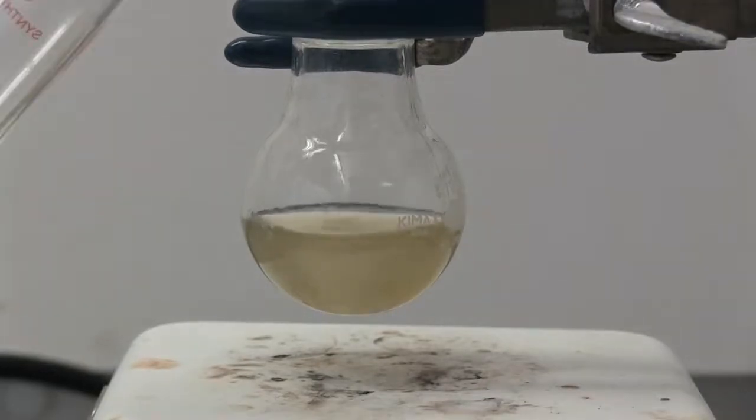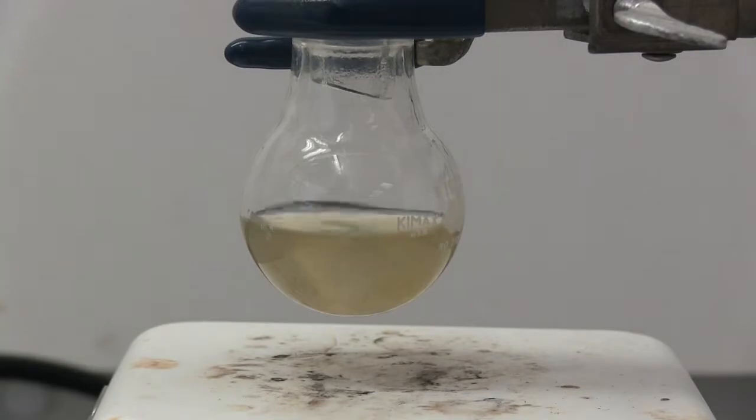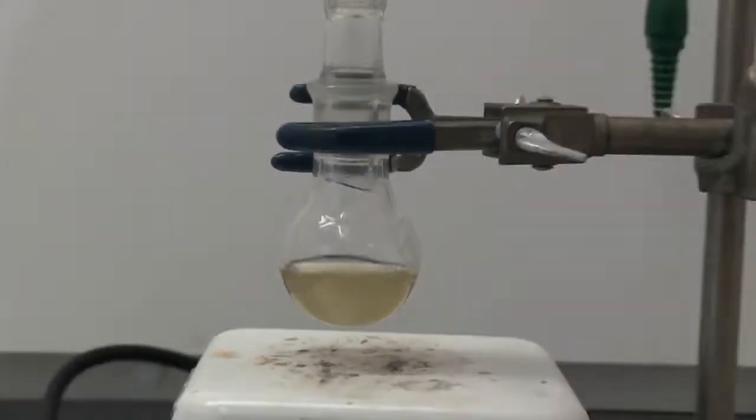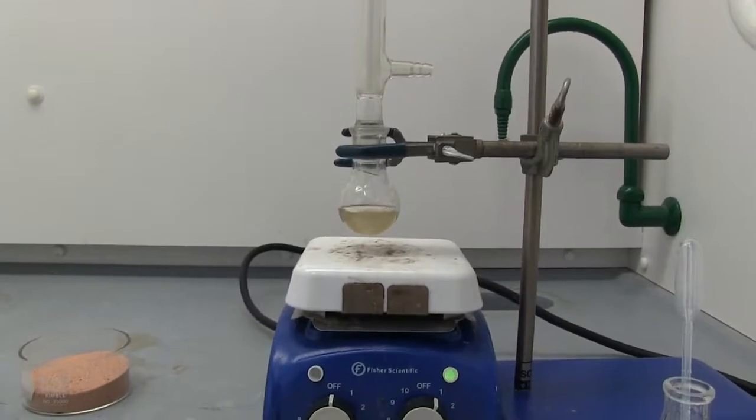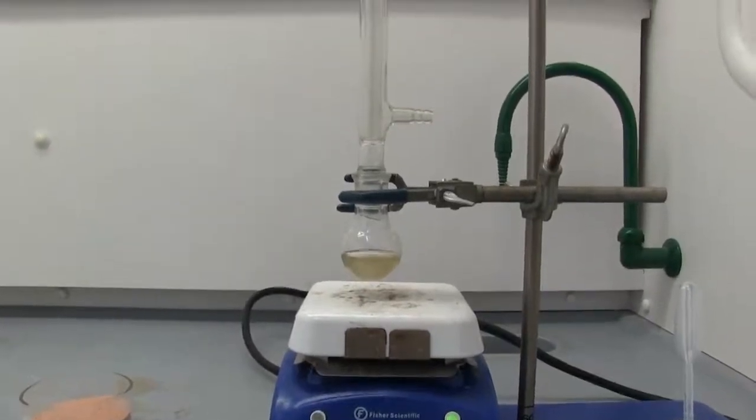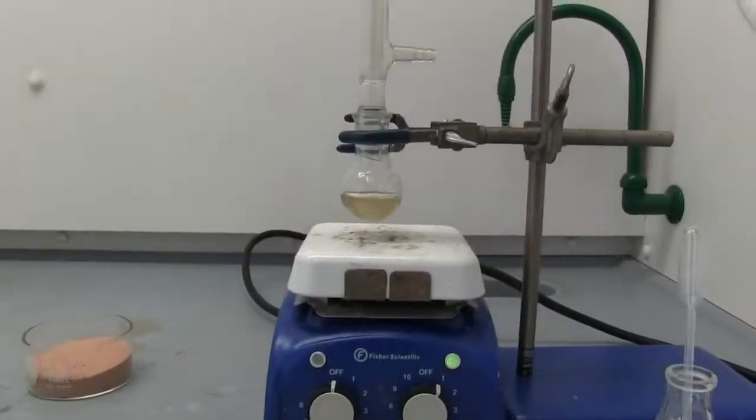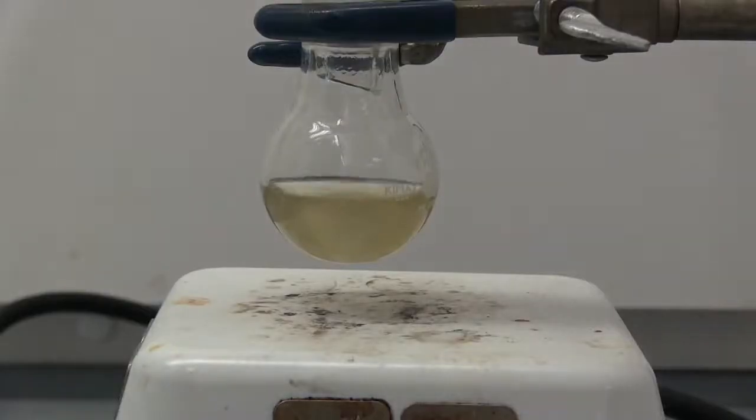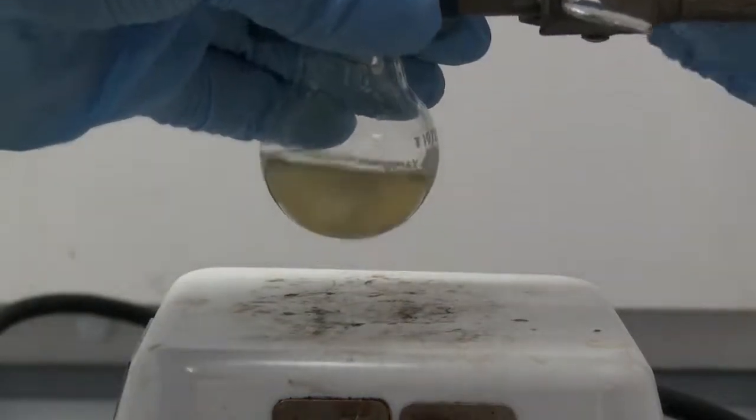Now you'll get our condenser on there. You don't need to attach it to water. You can just put it on and then put the drying tube at the top. Let me zoom out and show you what set up we have. So we have the flask on the bottom, condenser, and drying tube. Like I said, you don't need to set it up to water. So now we're going to put a sand bath underneath it so that we can heat it up.